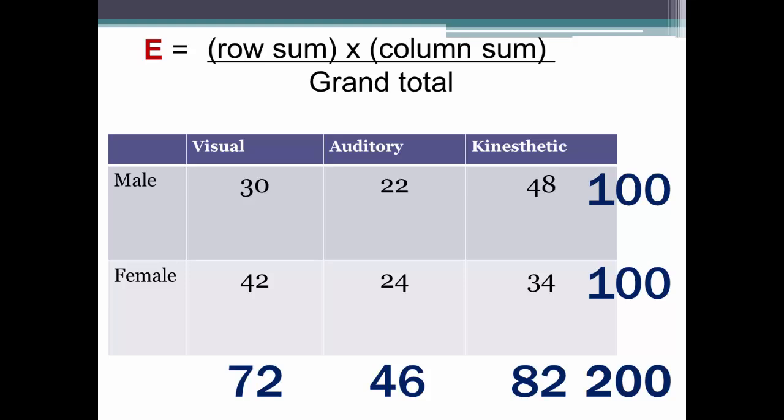Now we have all the data to calculate our expected values. Let's start with the first cell, males who are visual learners. We take the row sum for the males, 100, and multiply it by the column sum for visual, which is 72.